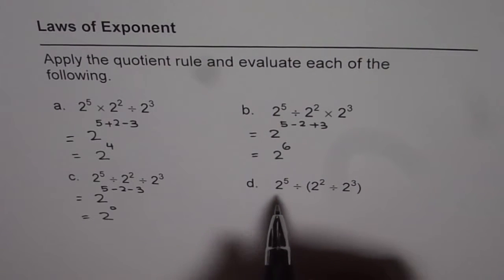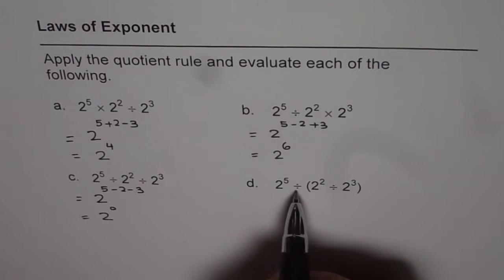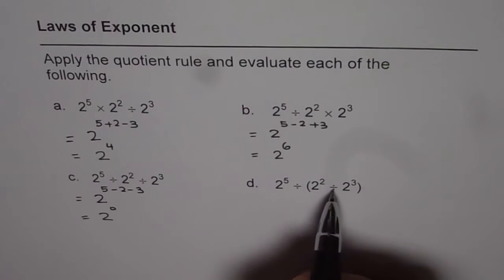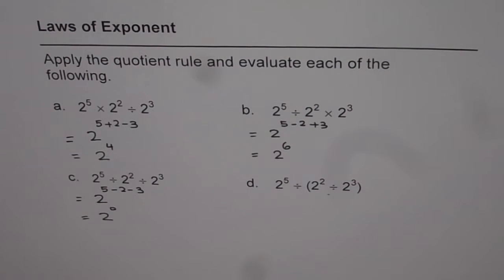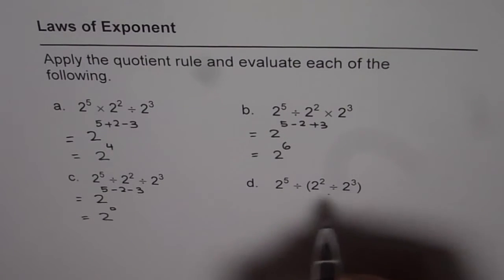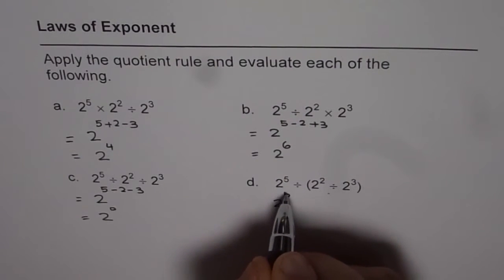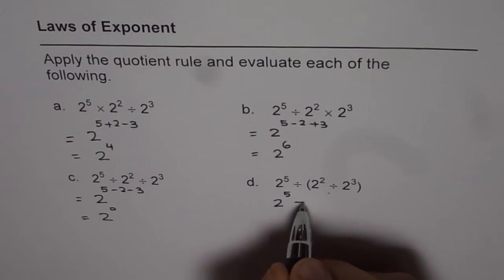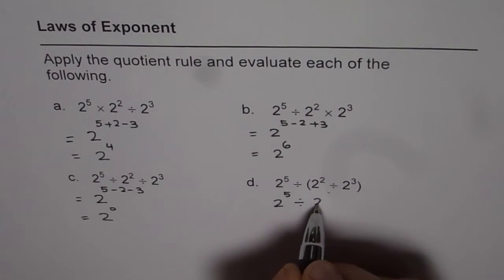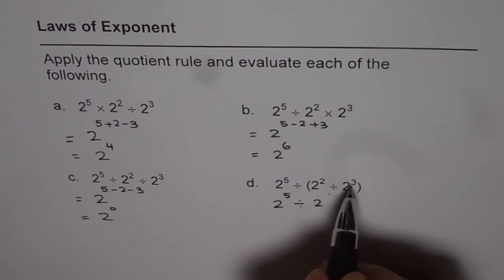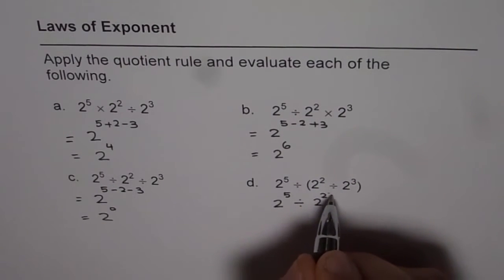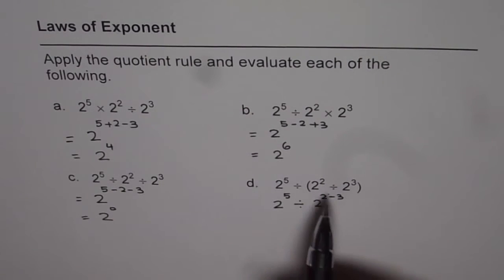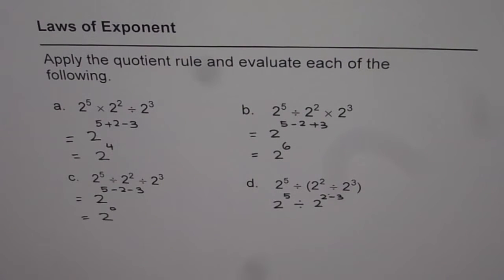And then we have 2 to the power of 5 divided by, within brackets, 2 squared divided by 2 cubed. You have to do the brackets first. What we get here is 2 to the power of 5 divided by 2 to the power of 2 minus 3. Do you see that? You have to do the brackets first — this is kind of tricky.